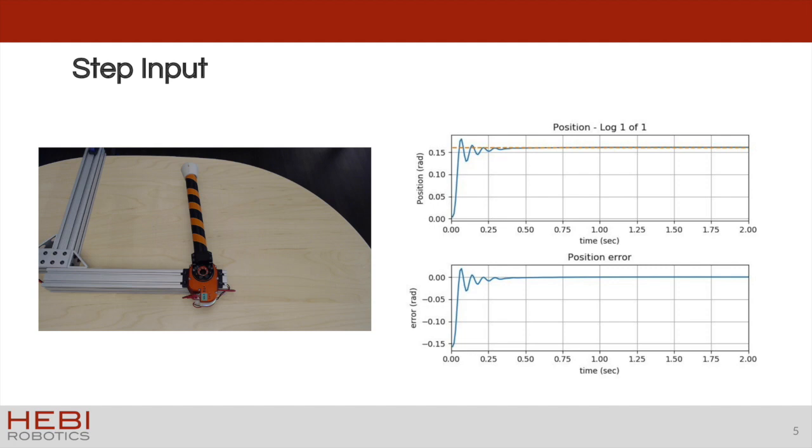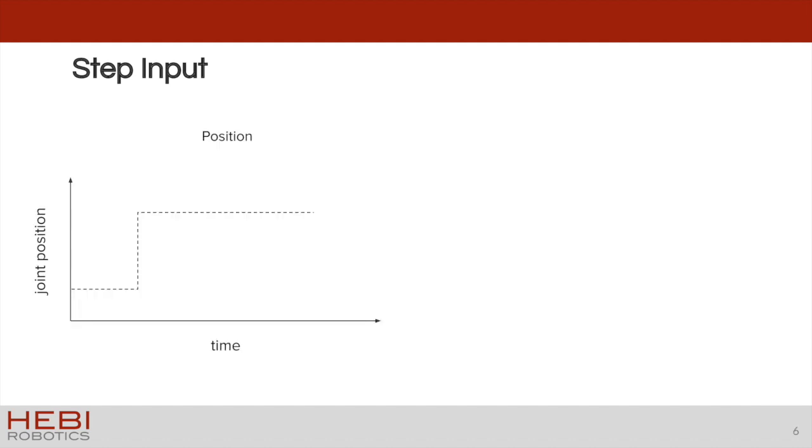So what do we mean by more feasible commands? Let's look at this step command in more detail. So let's plot the position over time, as well as the velocity. Now this makes the problem clear. We are asking the actuator to do something physically impossible. This step change in position requires an infinite velocity. Since actuators have maximum velocities in real life, we can construct a more feasible command trajectory by respecting that information.